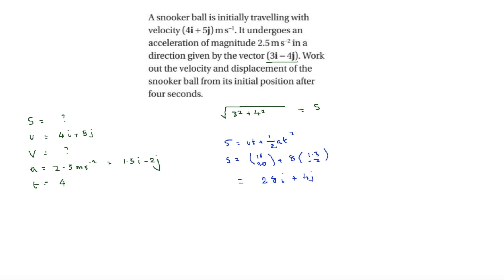Then for velocity, using v equals u plus at: v equals the vector 4, 5 plus 4 times the vector 1.5, minus 2, giving plus 6, minus 8. Therefore v equals 10i minus 3j. Thank you for watching this video — see you soon, bye.